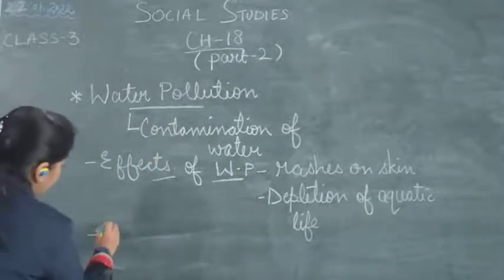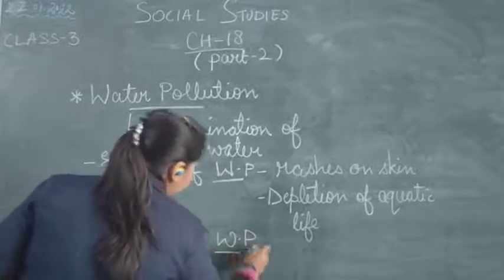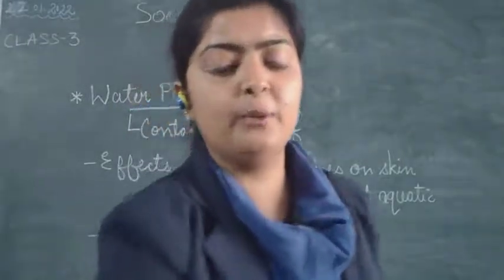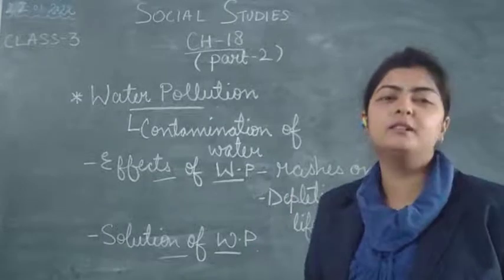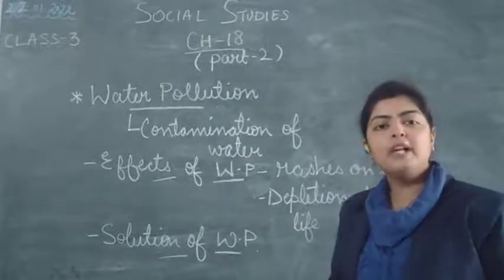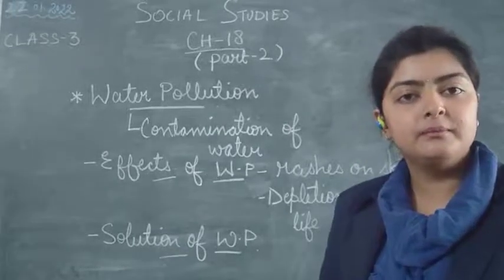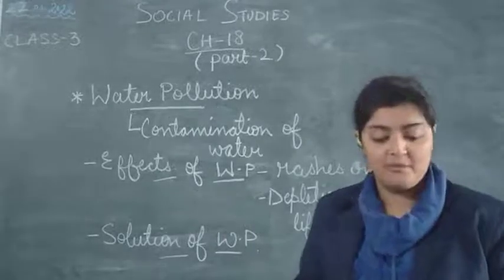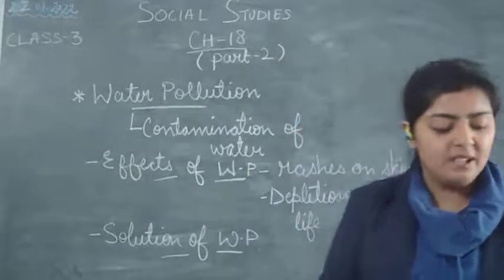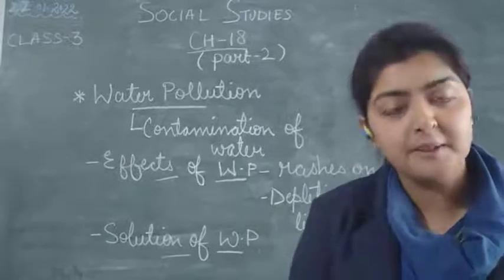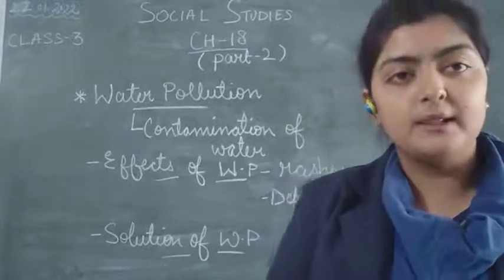Now what is the solution for water pollution? We should never throw rubbish into water bodies like beaches, rivers, lakes, and oceans — especially plastics. Any rubbish should not be thrown in water bodies. We should always use covered dustbins for this purpose.